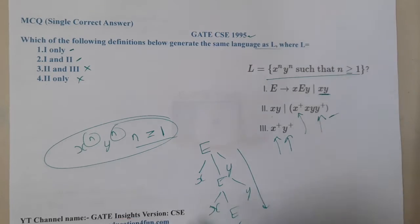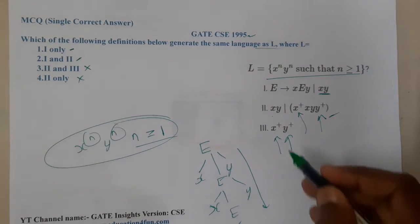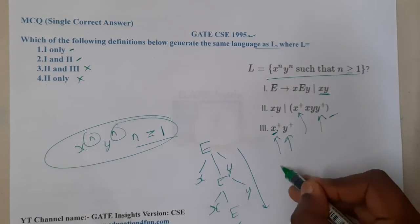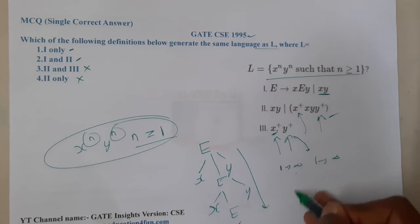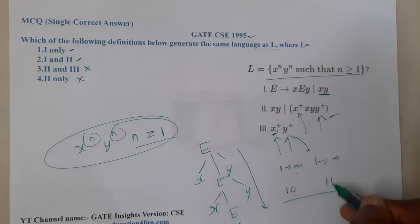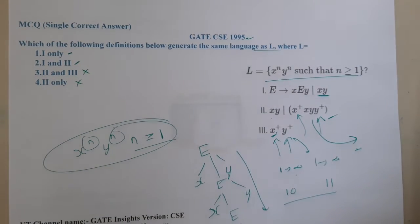Because here when we say plus, it is one to infinity, and this is also one to infinity. So here I will take a 10, here I will take 11. So I can take any random values. There is no rule that they should be same. That is the issue with respect to these two options.